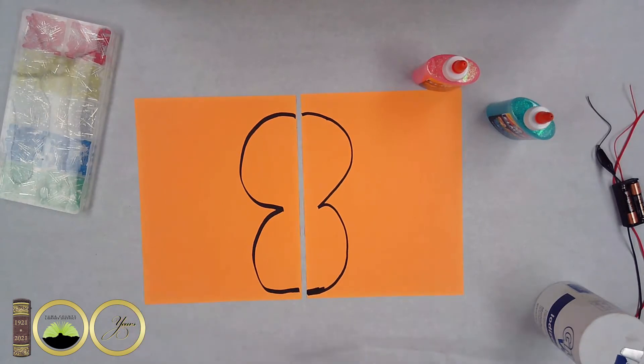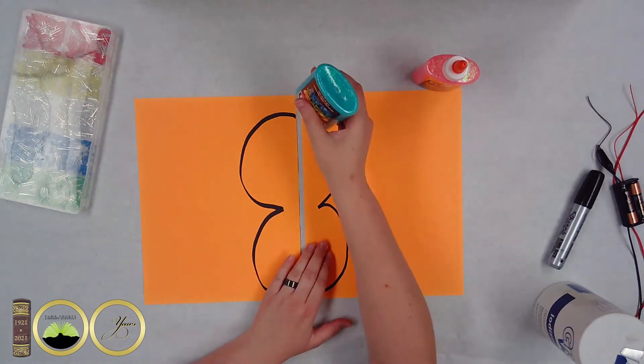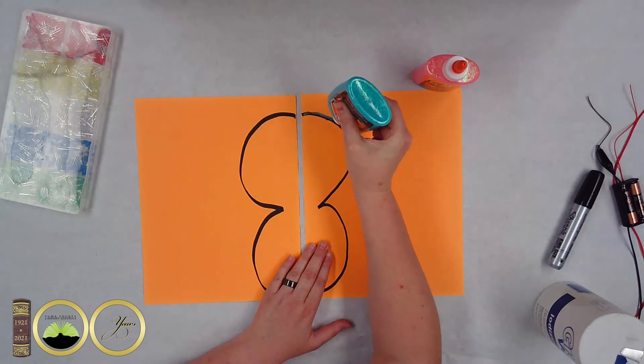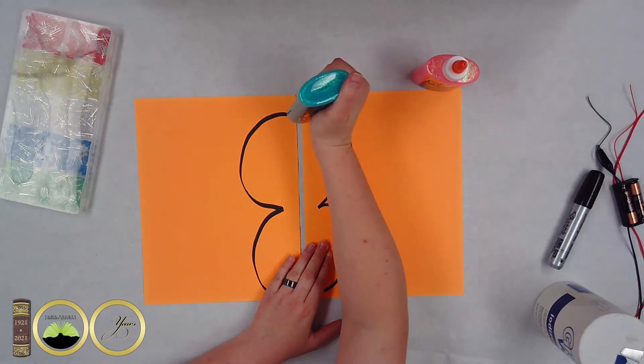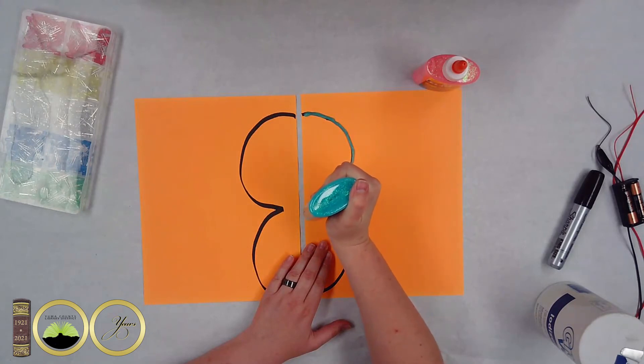Once we got them lined up we're going to trace over our design with the glue. I chose blue, a combo of blue and pink. You can use just blue or just pink. Whatever you want. It's important here to make sure that your lines are nice and thick. It'll make putting the LED light and the paper clips in much easier.